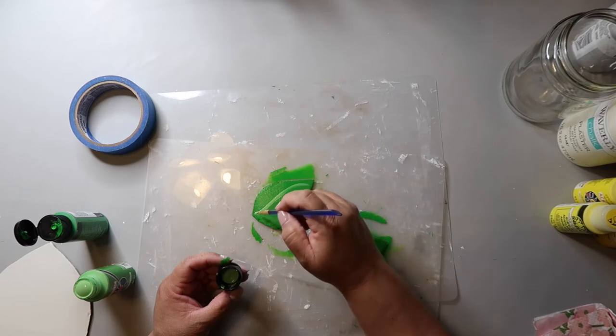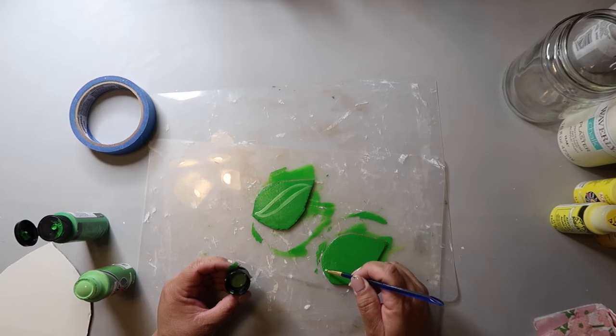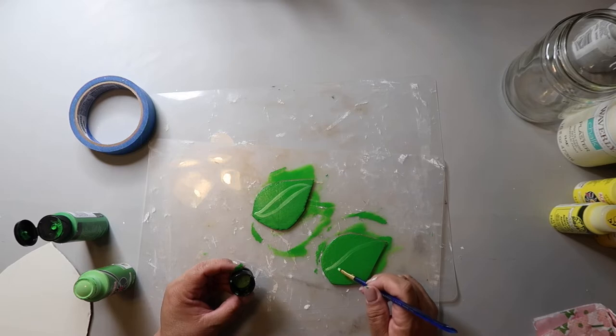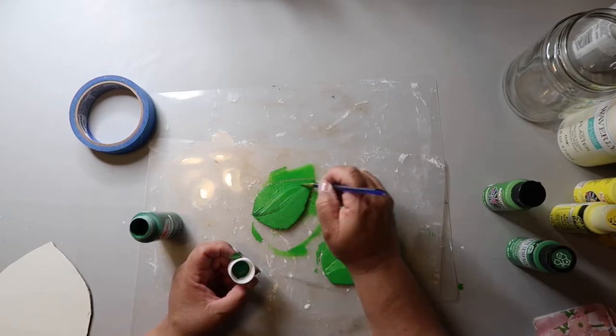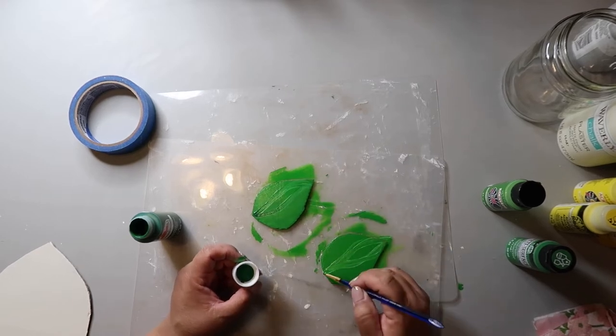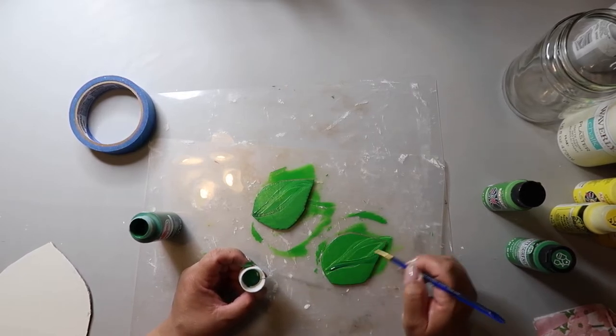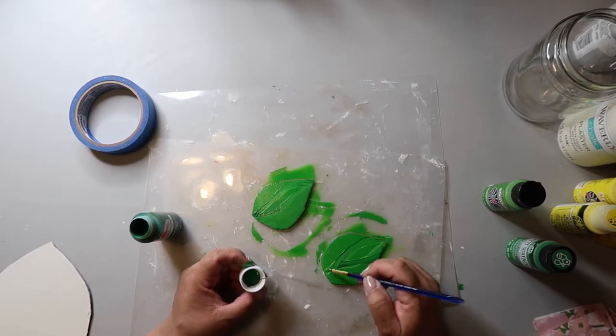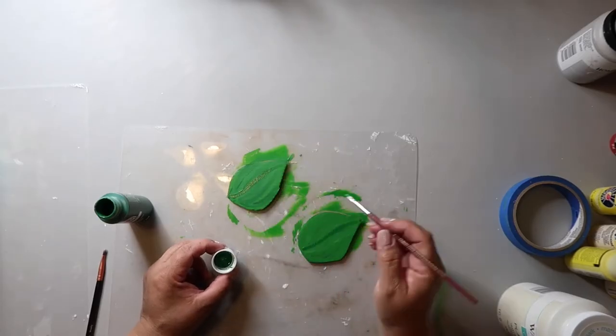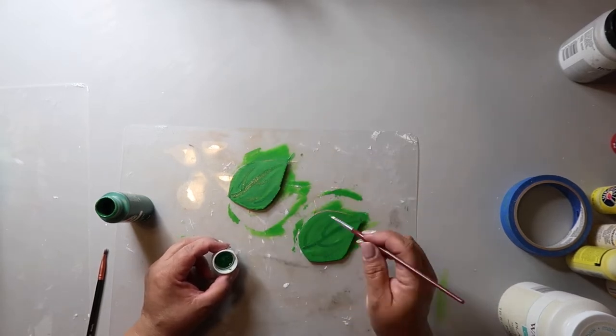And I'm taking this lighter color green. And while the first coat of the paint is still wet, I'm kind of making swooshy lines to simulate the veins of the leaves. And then I'm taking another darker shade of green and adding more swooshy lines. And they're a bit subtle, but I'm working from the less is more angle and just continuing to build up at this point.